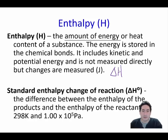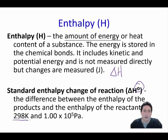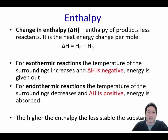For standard enthalpy of reaction, don't forget to include the little zero symbol, and the conditions are 298 Kelvin and 100,000 pascals. To measure the change in enthalpy, reactants go to products, and we always take products minus reactants to calculate delta H.